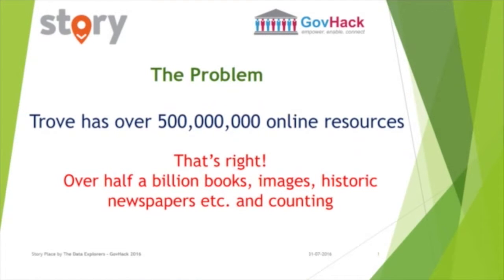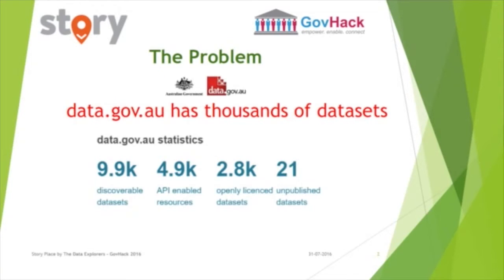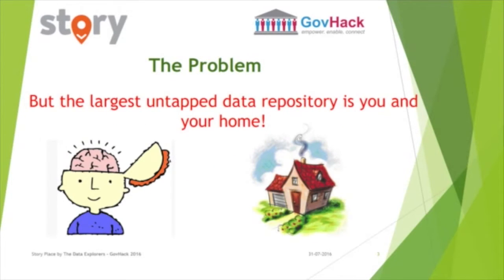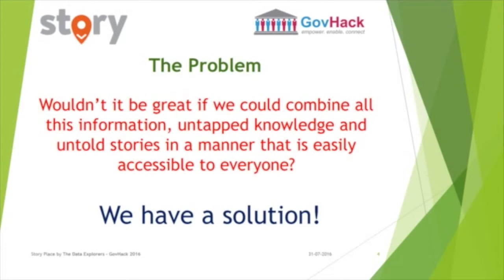The problem. Trove has over 500 million online resources — that's right, over half a billion books, images, historic newspapers and counting. Data.gov.au has thousands of data sets, many of which are historic archives hidden away in the data portal. But the largest untapped data repository is you and your home. Wouldn't it be great if we could combine all this information, untapped knowledge and untold stories in a manner that is easily accessible to everyone?